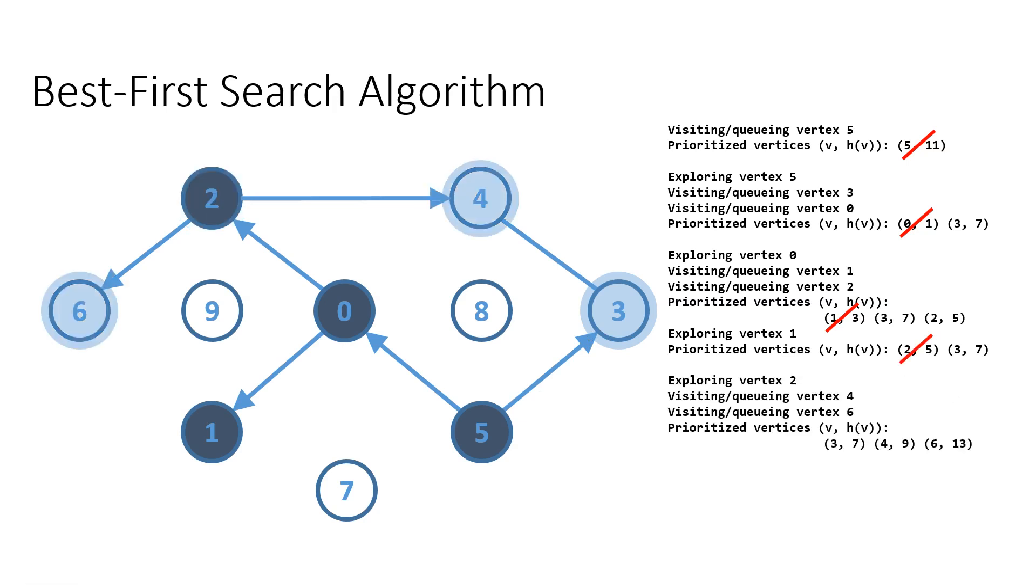One step further, we are removing vertex two and now we have vertices three, four and six with appropriate priorities seven, nine and thirteen.